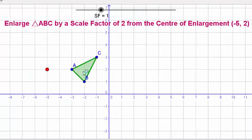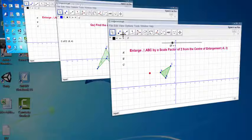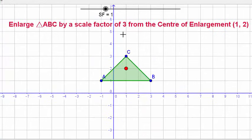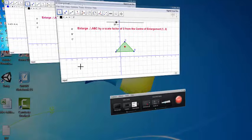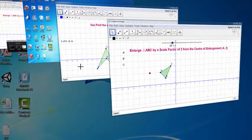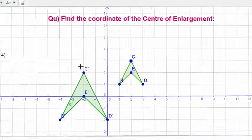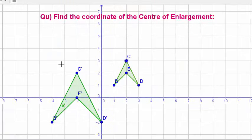This first one, we're going to be finding where the center of enlargement is. The next example, we will be enlarging triangle ABC by a scale factor of 2. And the last example, we will be enlarging triangle ABC by scale factor of 3, and they all have their own little challenges.